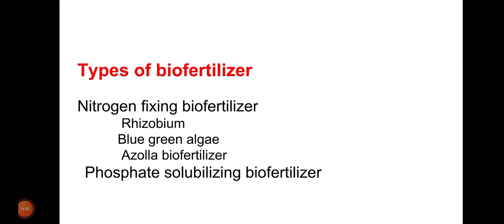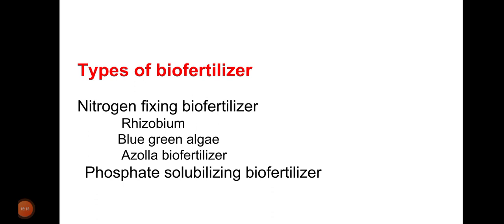Now, what are the types of biofertilizer? Nitrogen-fixing biofertilizers include Rhizobium, Blue Green Algae (BGA), and Azolla biofertilizer. There are also phosphate-solubilizing biofertilizers. Rhizobium, BGA, and Azolla are all living organisms. For phosphate-solubilizing biofertilizers, mycorrhizae are used - 'myco' means fungi and 'rhizae' means roots, so mycorrhizae are fungi that appear in close association with roots.